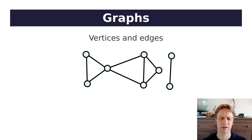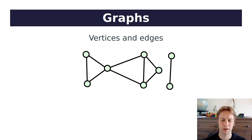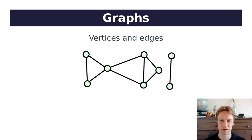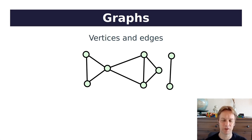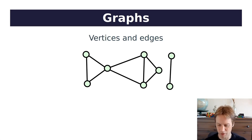Edges especially is a slightly confusing word until you get used to it. If you hear me talking about nodes, that's because sometimes the dots are called nodes instead of vertices. I'll try not to say nodes, but I might accidentally. So: vertices and edges, dots and lines. Some of the dots are connected by lines, and that's what a graph is.